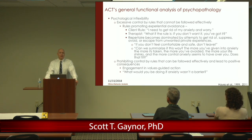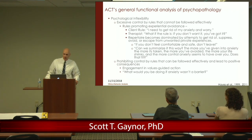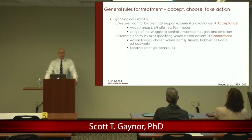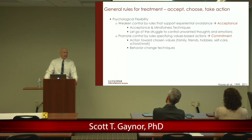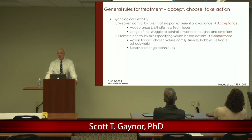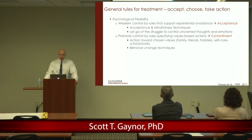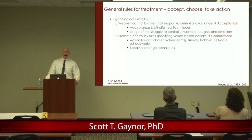From an ACT perspective, those effective rules involve engagement in values-guided action. We ask: 'What would you be doing if anxiety wasn't a barrier?' For this client, the answer was getting prenatal care — she suspected she was 10 weeks pregnant, hadn't been out of the house in 10 months, and very much valued being a good mother. ACT's general rules for treatment are: learn to accept private events, choose what's important to you, and take action based on those values — that's psychological flexibility, the flip side of psychological inflexibility.